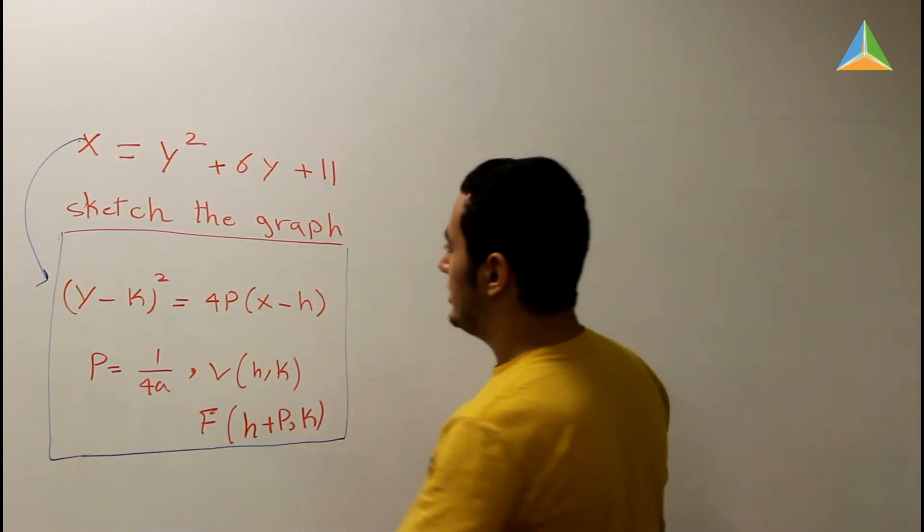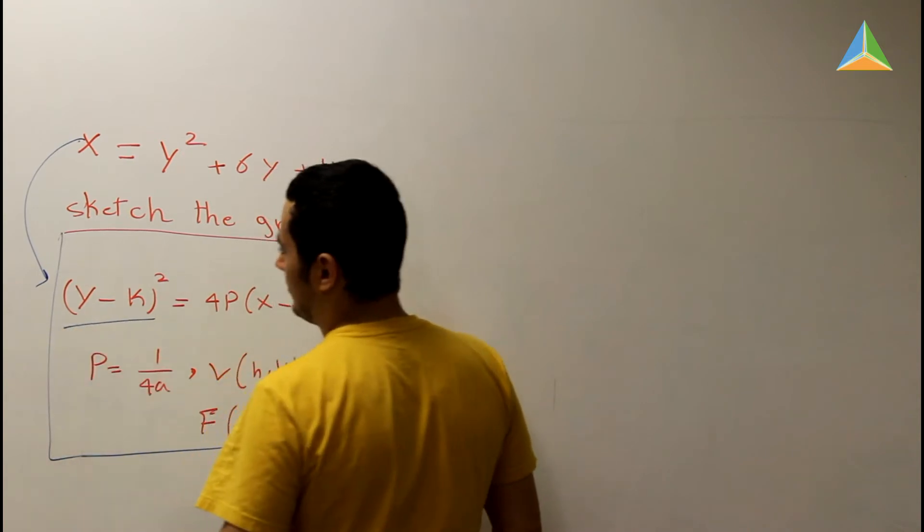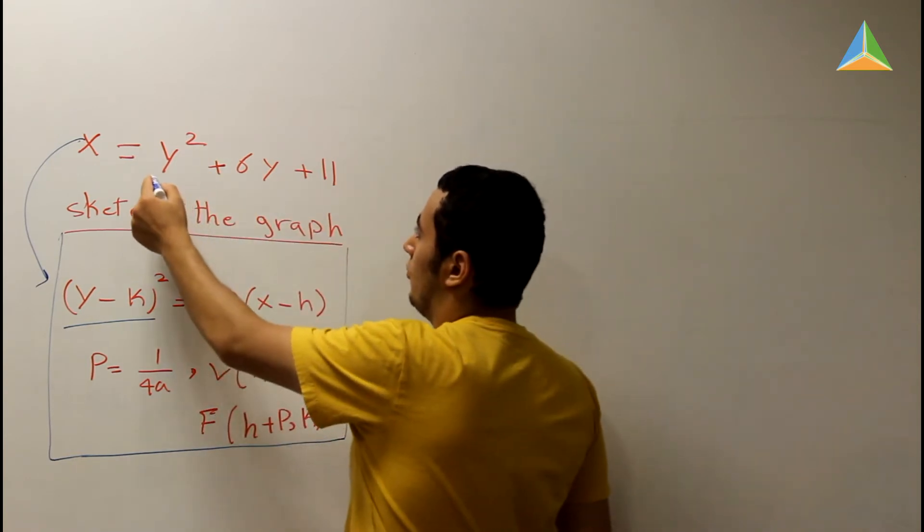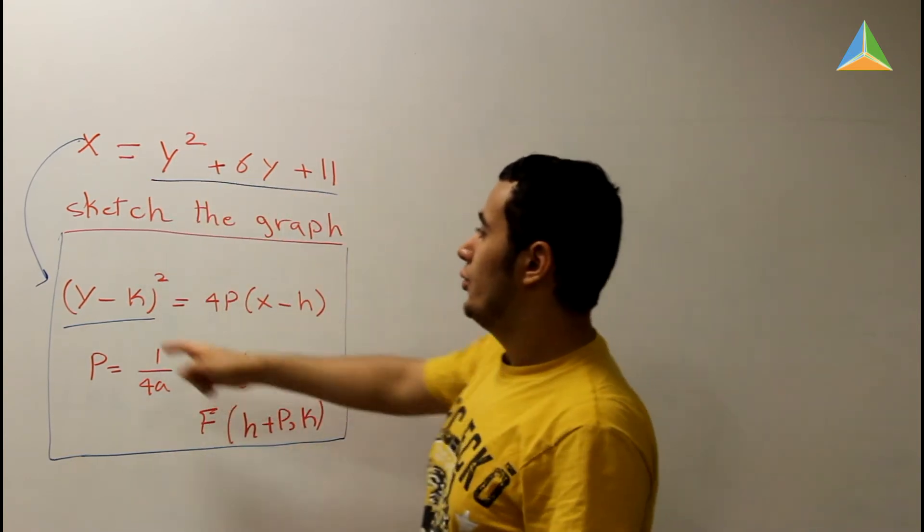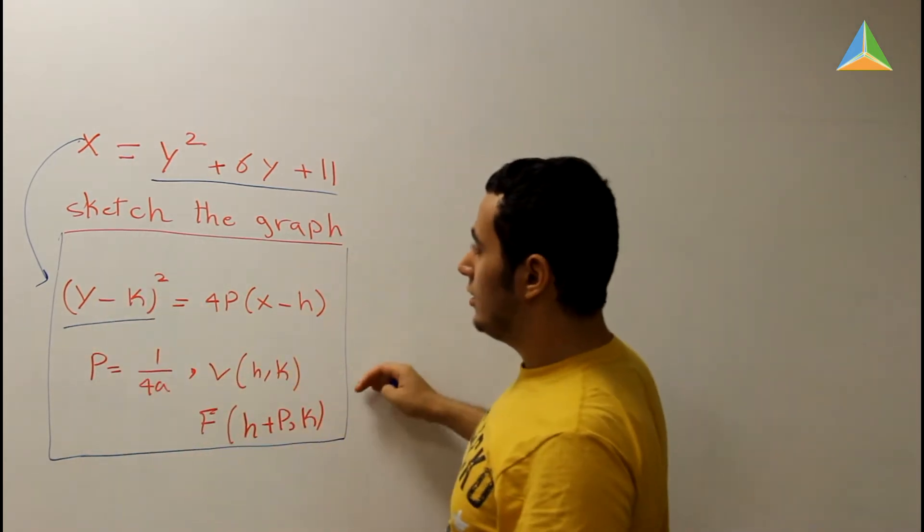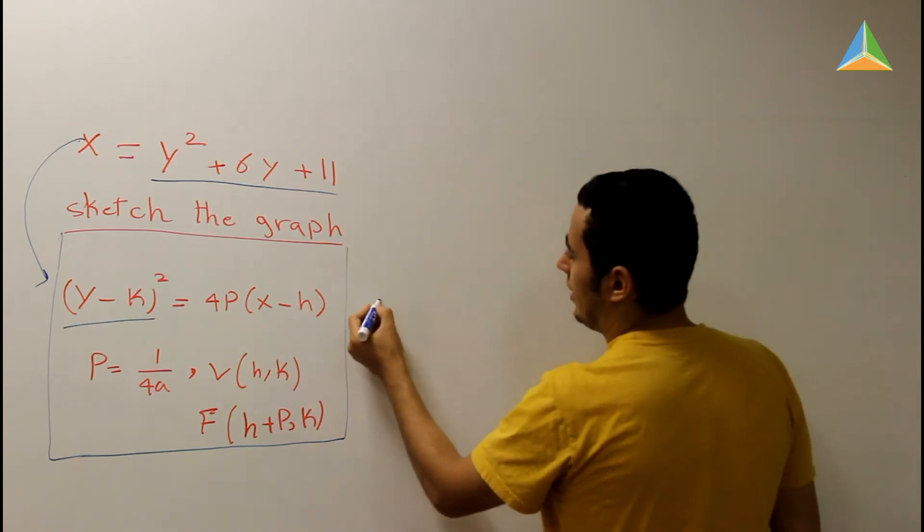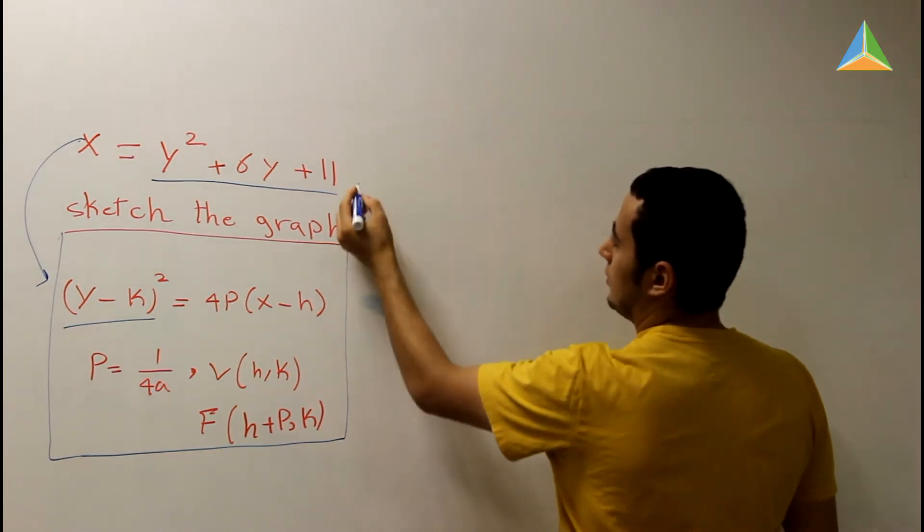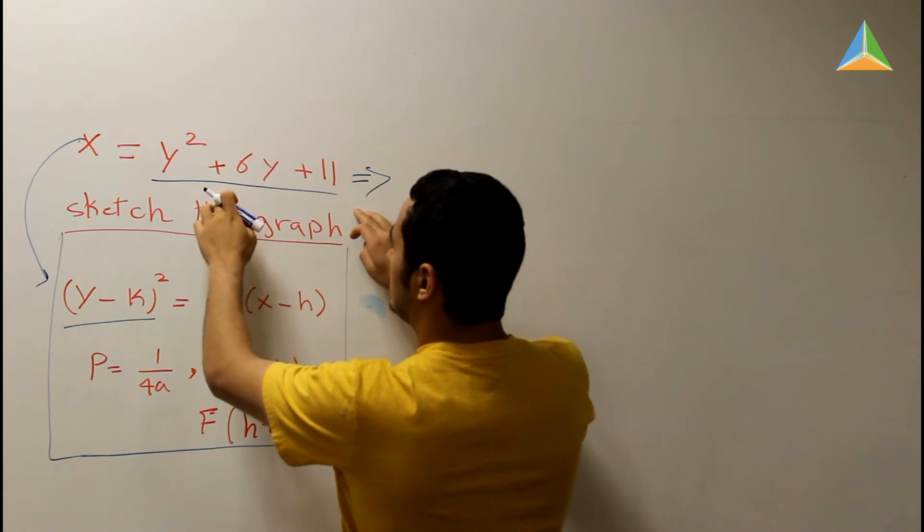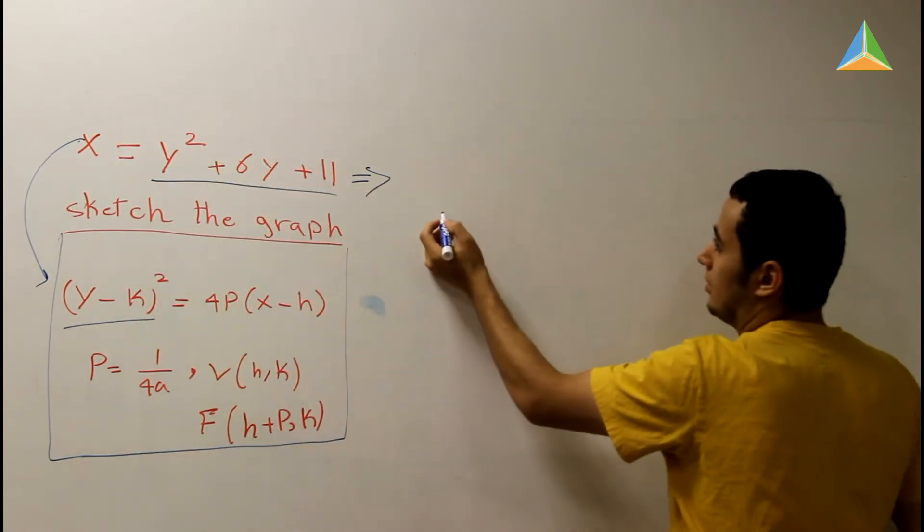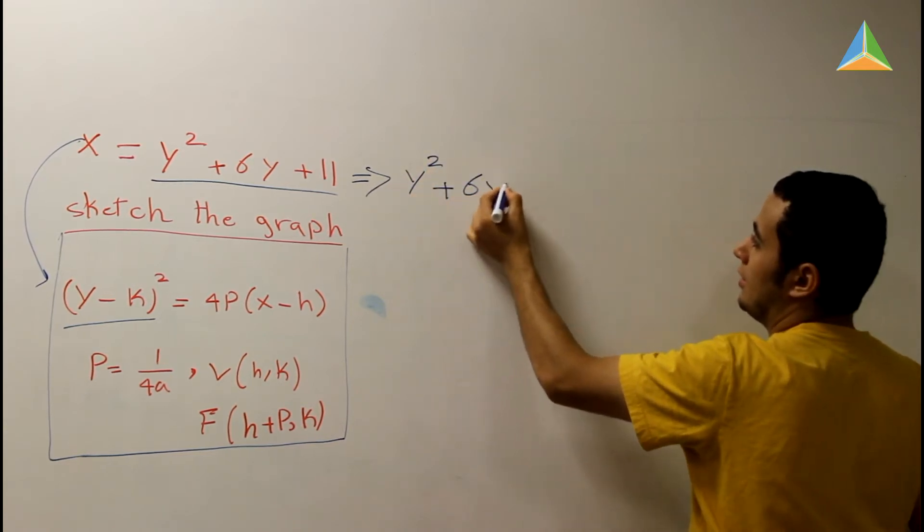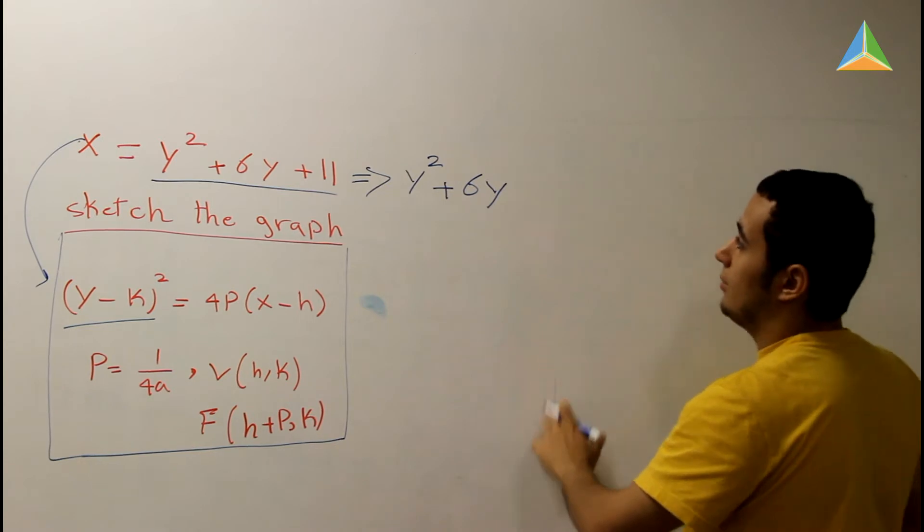How are you going to do that? We see here that this is an expression which is (y-k)². How are we going to transfer this expression y² + 6y + 11 into (y-k)² between parentheses to the power 2? What I like to do is transfer this to the right and this to the left. So I'm going to say y² + 6y. I'm going to stop here. I'm going to complete the square.